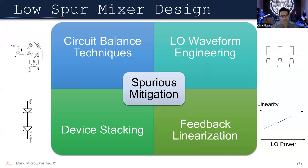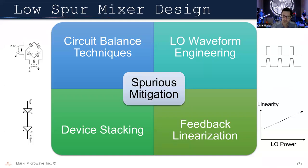At the mixer design level, there are four major methods to eliminate spurious products. First and most well-understood is circuit balance — analyzing M-by-N products in double-balanced mixers. Second is LO waveform engineering: switching the diode on and off as quickly as possible to reduce small-signal intermod. Third is device stacking: making the diode turn on at such high power that the small signal cannot modulate it. Fourth is feedback linearization, related to Marquee's T3 mixer.